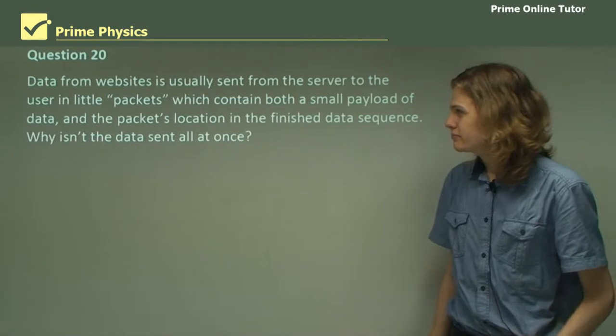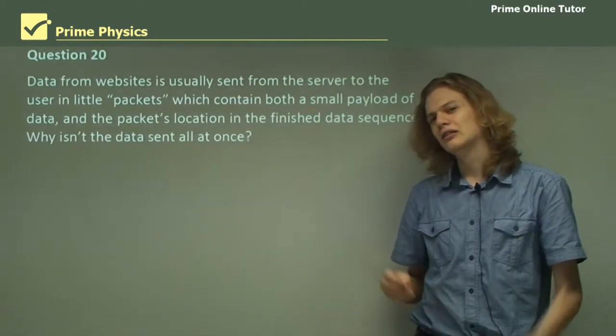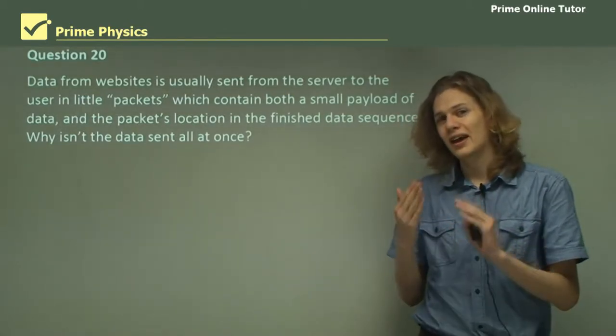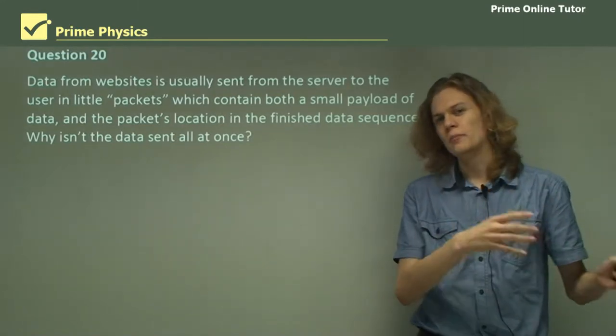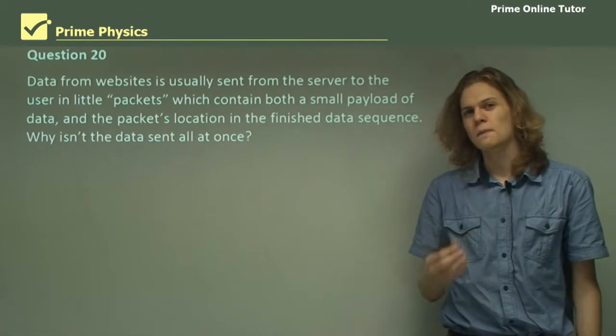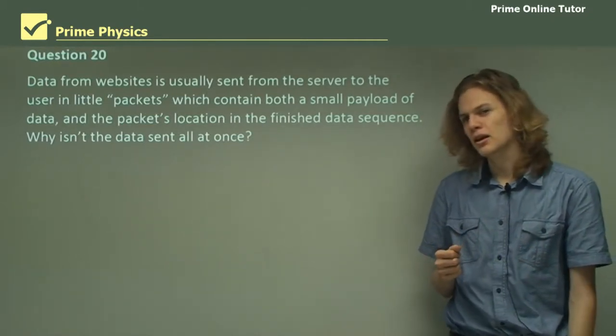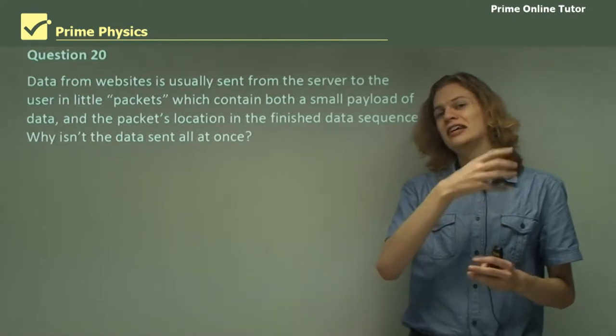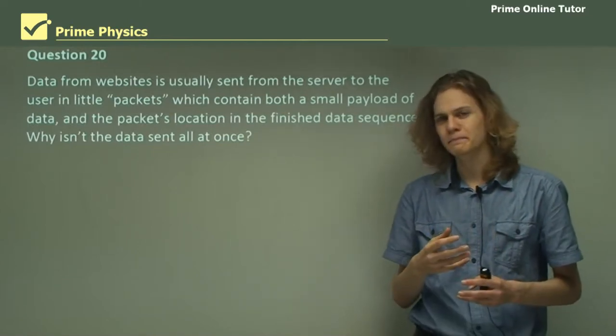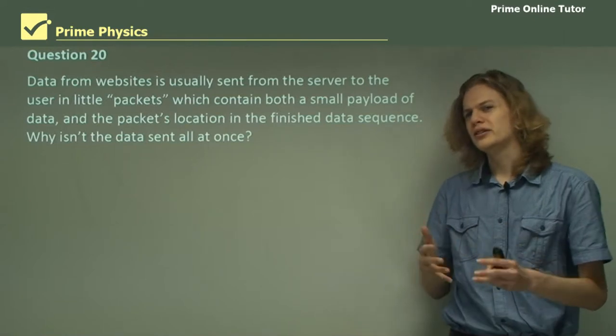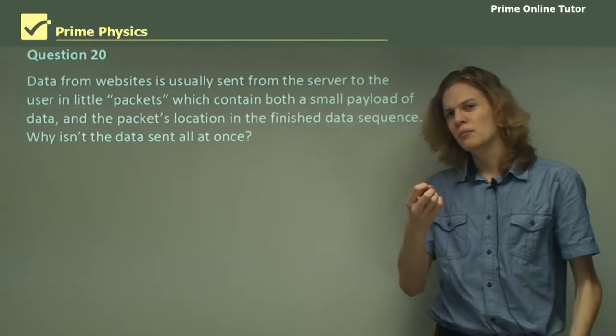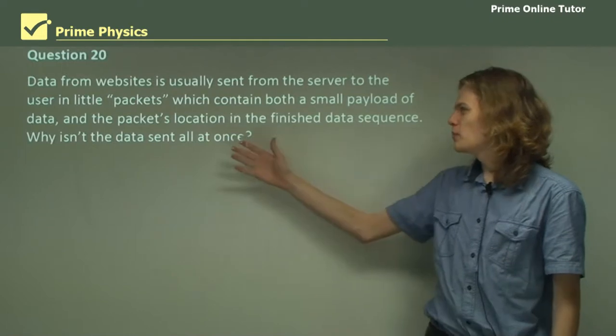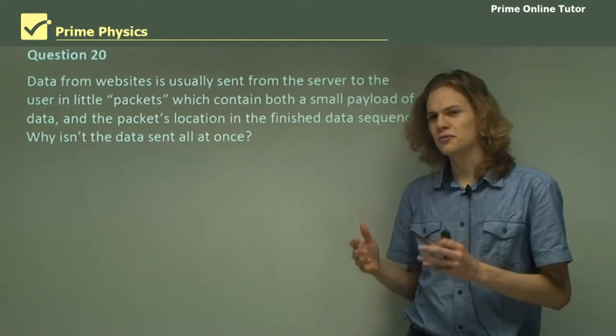Question 20. Data from websites is usually sent from the server to the user in little packets. Each packet contains a certain amount of data and a position where it matches up in the packets. So, it might be an identifier saying, this is which packet I am. Now, the thing is, if we're sending both a payload of data and information about that data, sometimes called metadata, then we're actually sending more information than we need to. We're sending a payload plus an extra bit that's hanging on for no apparent reason. So, why do we send this extra bit? Why do we send the packet's location in the finished sequence instead of just the finished sequence?